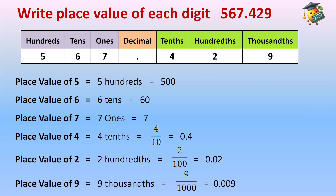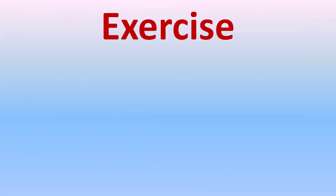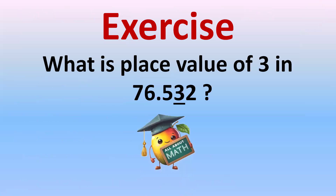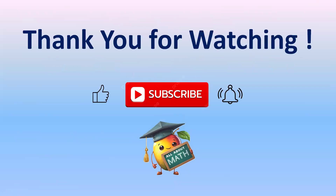Now it's your turn to do some practice. The question is: what is the place value of three in 76.7352? Write decimal above the decimal, ones and tens before it, and tenths, hundredths, thousandths after it. Since they said 'place value,' write the digit as well. Write your answer in the comment section and I'll check how many of you get it correct.